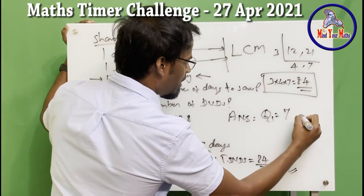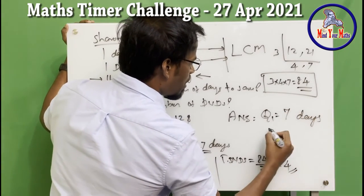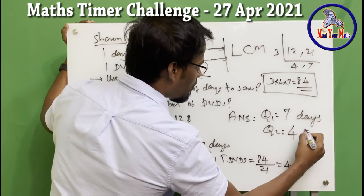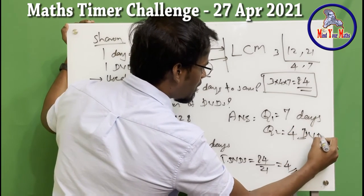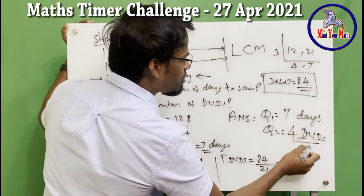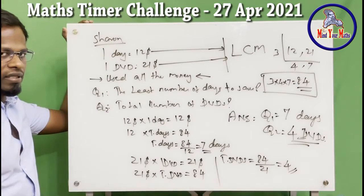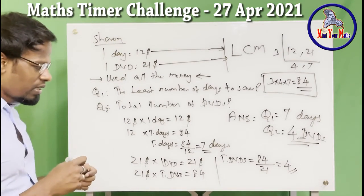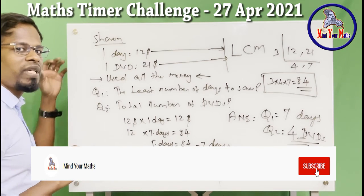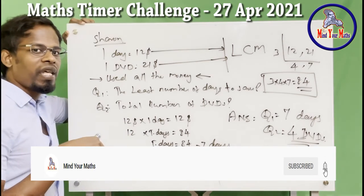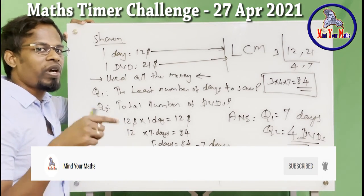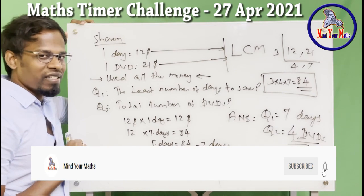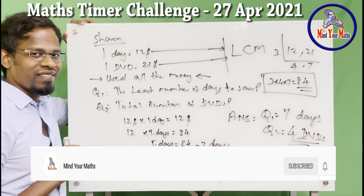So the answers are: Question 1 — 7 days; Question 2 — 4 DVDs. That's all for this video. Please don't forget to comment the link if you participated in the Maths Timer Challenge. Thanks, guys!